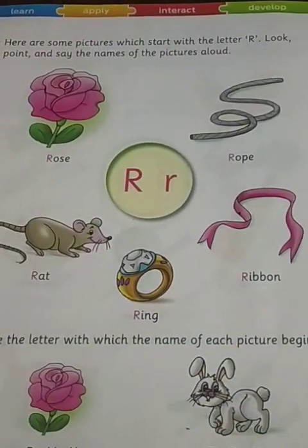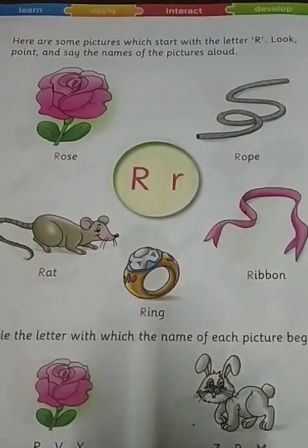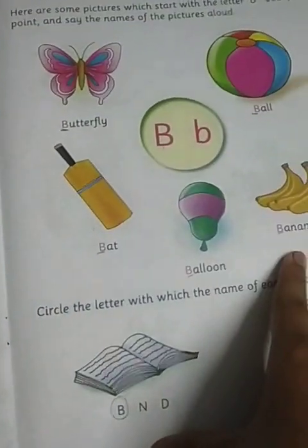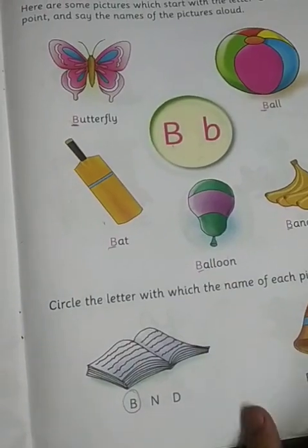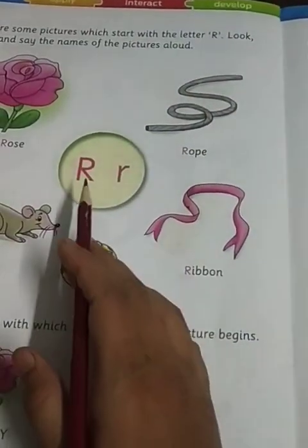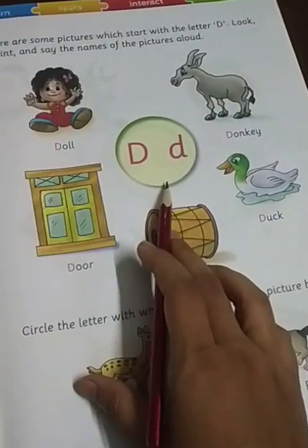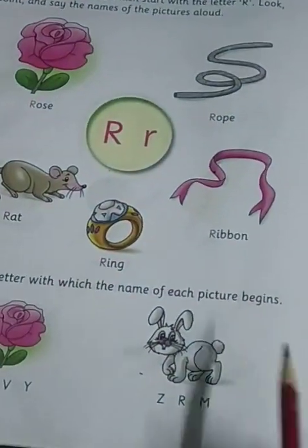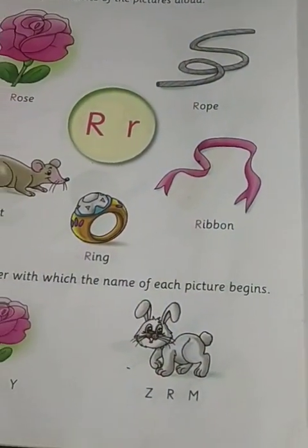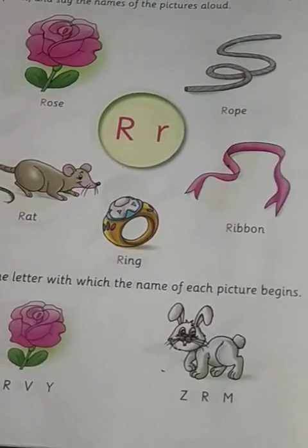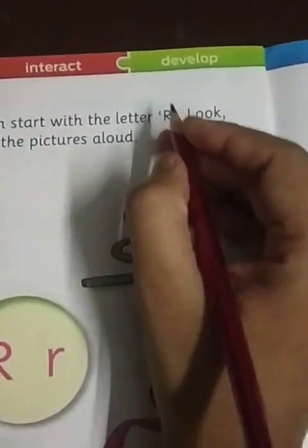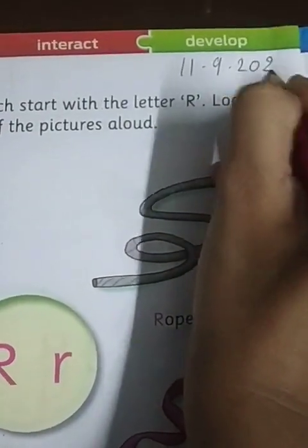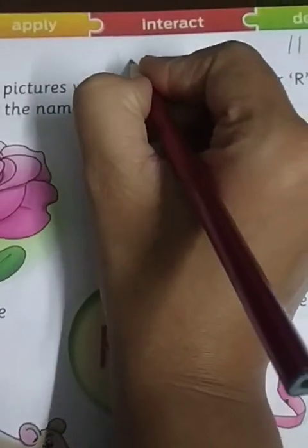Good morning, students. In the first part of today's English video, we learned two letters: P and B. In this part, we are going to learn two new letters, R and D. Let's begin with letter R. Keep your English workbook and notebook with you. Write down the date: 11, 9, 2020, and then classwork.